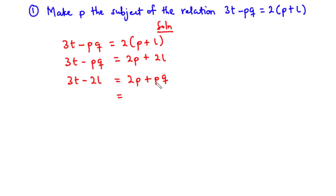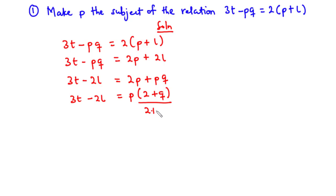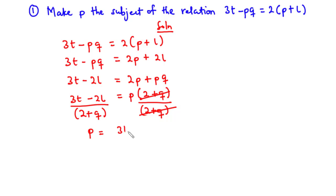Since p is common to both terms on the right, we factor out p: p times open bracket 2 plus q close bracket equals 3t minus 2l. To make p stand alone we divide through by 2 plus q, giving p equals 3t minus 2l divided by 2 plus q. We've been able to make p the subject of the relation.